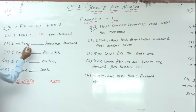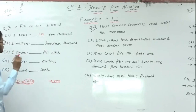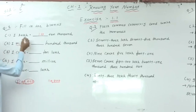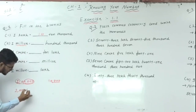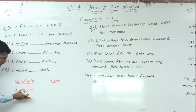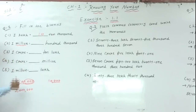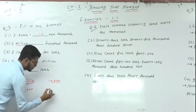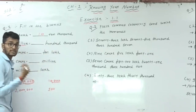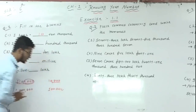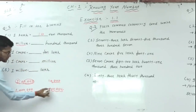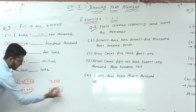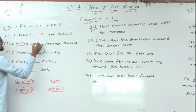Same for the second question: 1 million is equal to how many 100,000s? Million is used in the international system, like lakh is used in the Indian system. Write down 1 million: 1, 10, 100, 1000, 10,000, 100,000, and million. Here 100,000 has 5 zeros and 1 million has 6 zeros — 1 zero difference — so the answer is also 10.